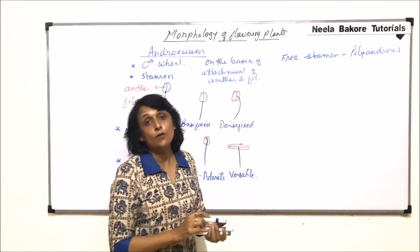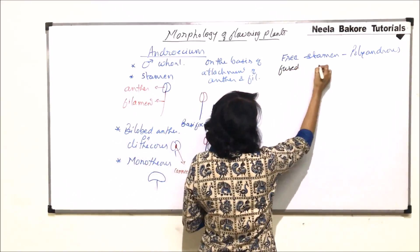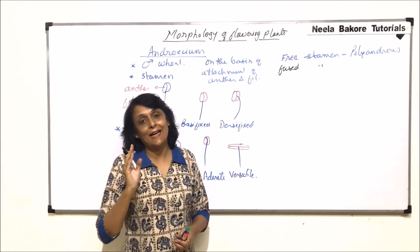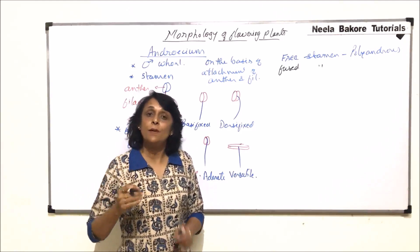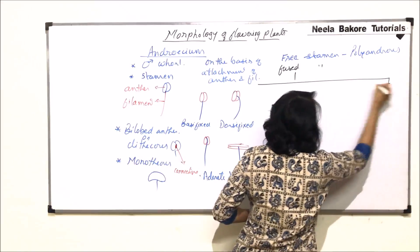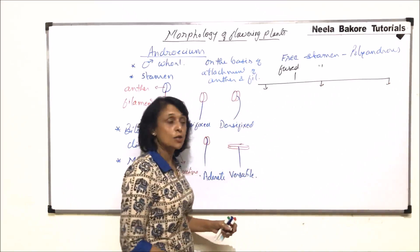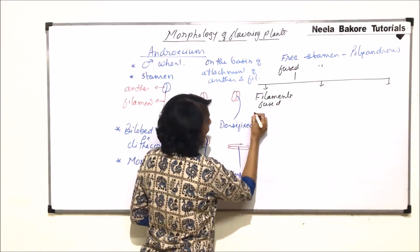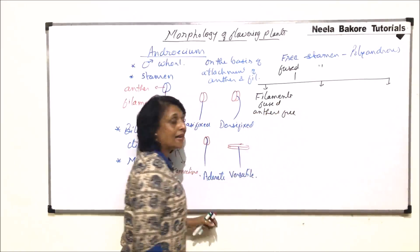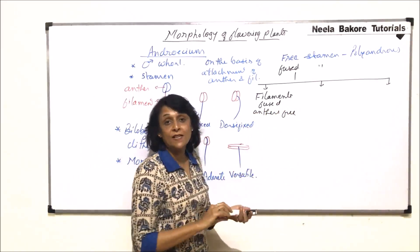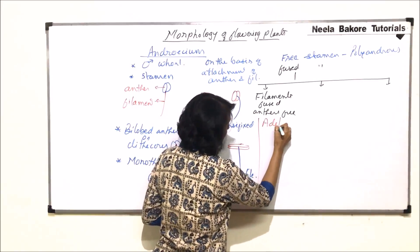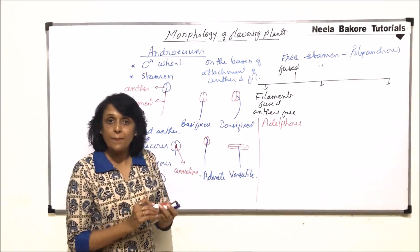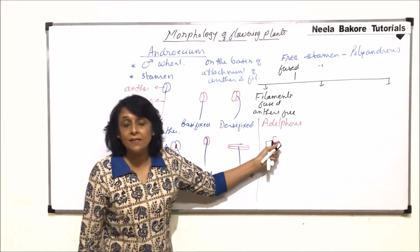The second condition is the fused stamen. In fused stamens, we need to ask: is it only the filaments fused, or is it the anthers fused, or is it both anthers and filaments fused? These fused conditions are classified into three categories. The first is where only the filaments are fused but the anthers are free — such a condition is known as adelphous.